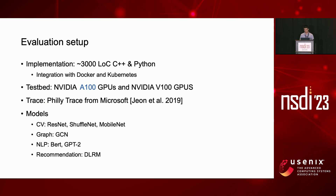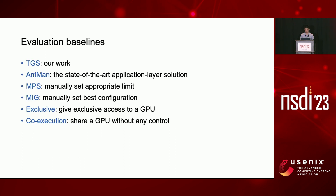With this design, we implemented a prototype of TGS with about 3,000 lines of code and integrated it with Docker. Our evaluation is performed on a server with two NVIDIA A100 GPUs and an AWS instance with one NVIDIA V100 GPU. We used real-world traces from Microsoft and seven popular DL models. We compared six mechanisms: TGS, Antman, MPS, MIG, Exclusive, and Co-Execution. For MPS and MIG, we manually set the appropriate limit or best configuration. Exclusive provides each job exclusive access to a GPU, and Co-Execution shares a GPU between jobs without any control.